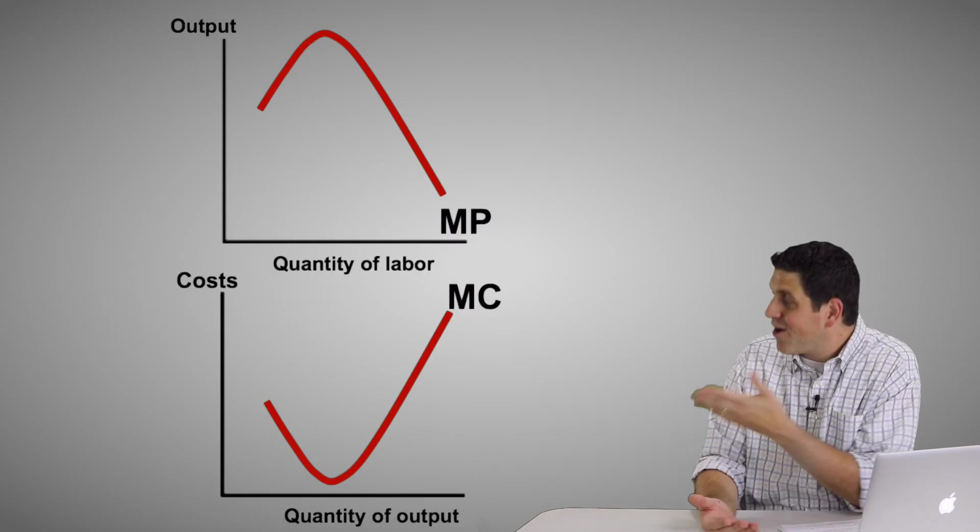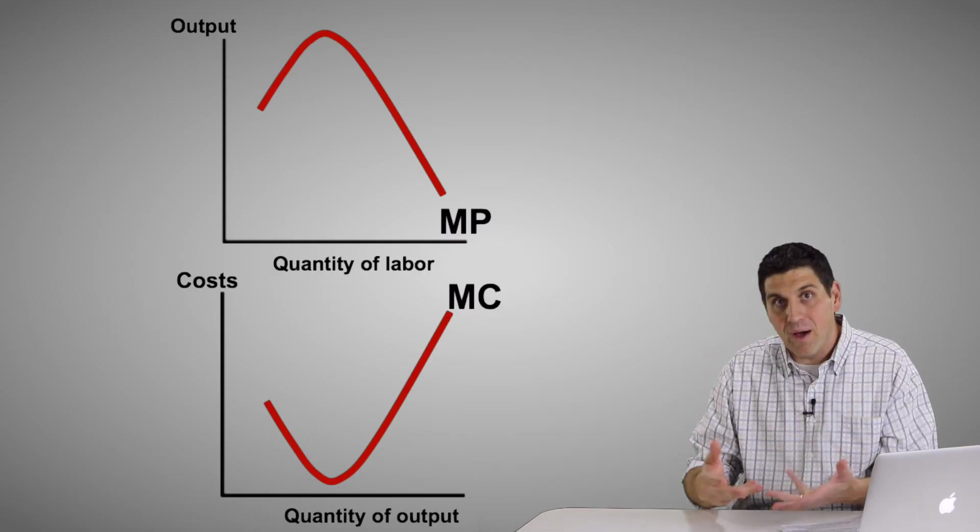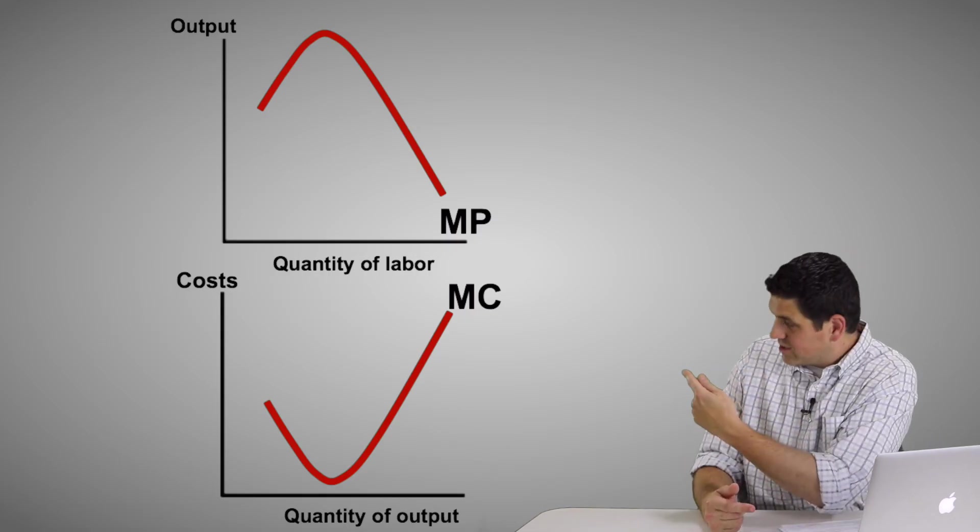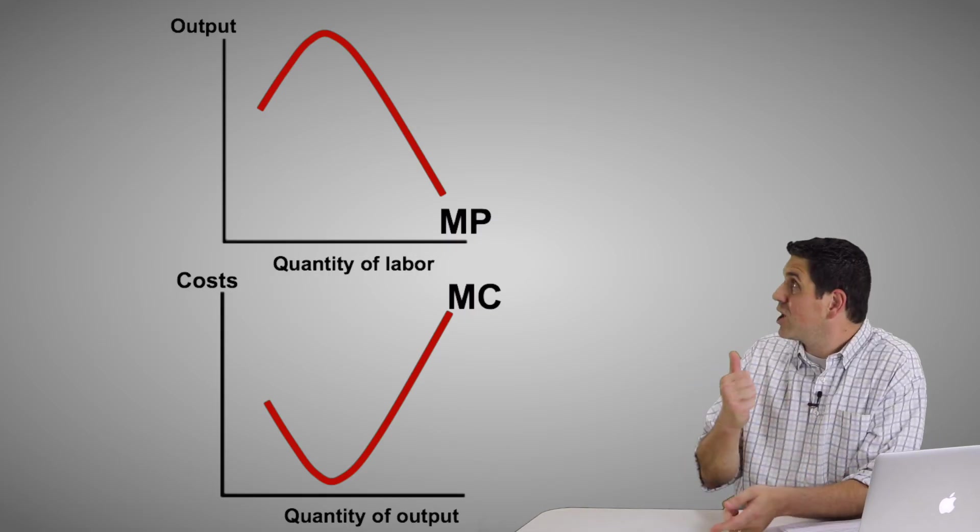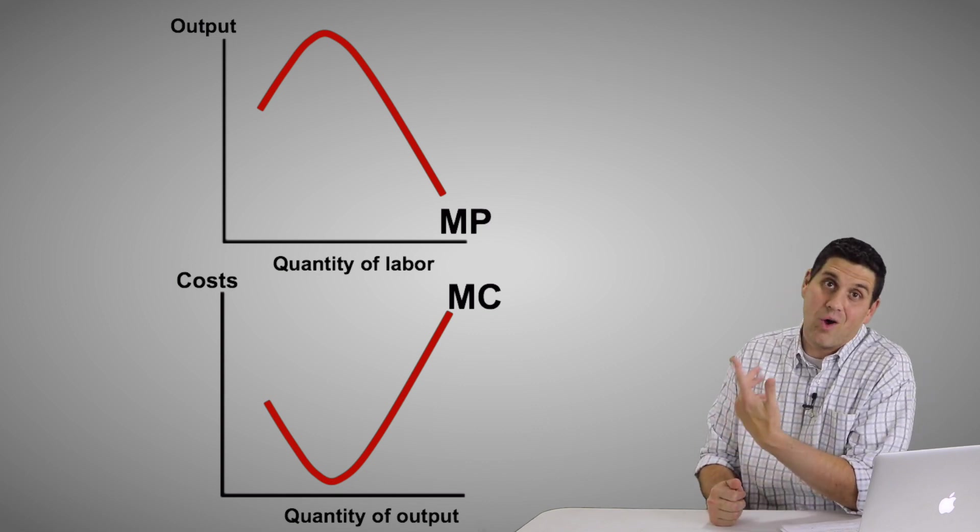And that's the reason why the marginal cost goes down, because each worker is producing more output. They're more productive. And so the additional cost of those units is going to fall. But since each worker produces less additional output, eventually the additional cost of those units is going to go back up.